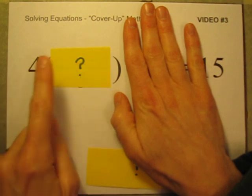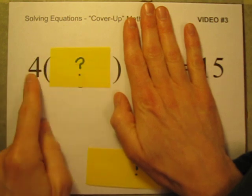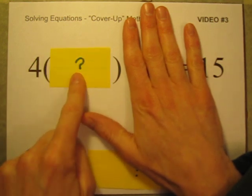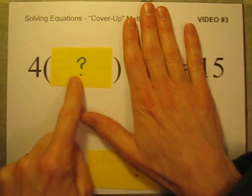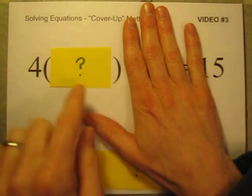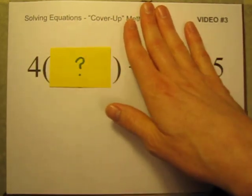So 4 times what is 12? 4 times 3 is 12. So this chunk I'm covering up now must be equal to 3. So when I uncover it, I know everything under here must be equal to 3. Let's keep going.